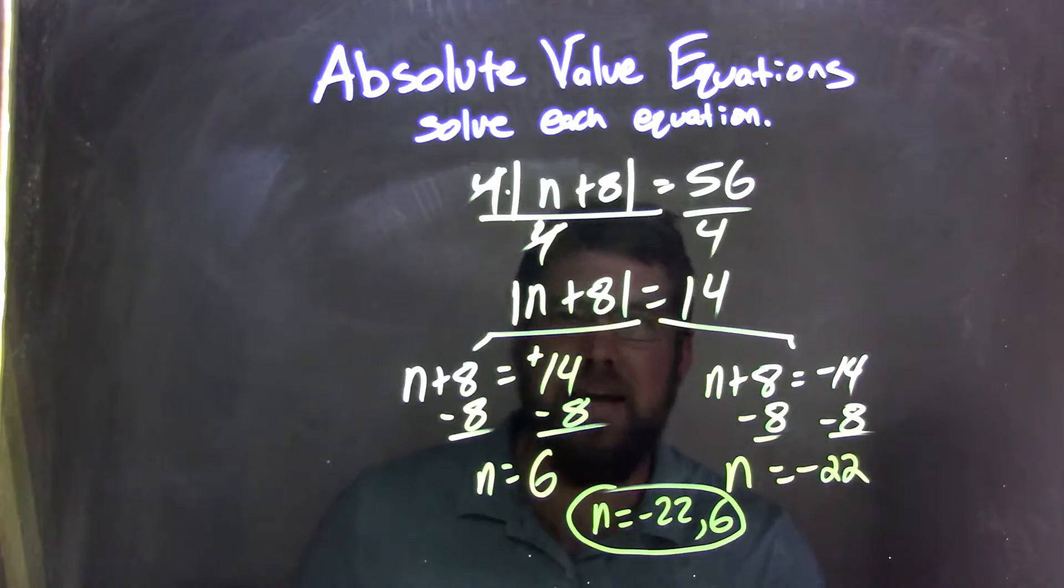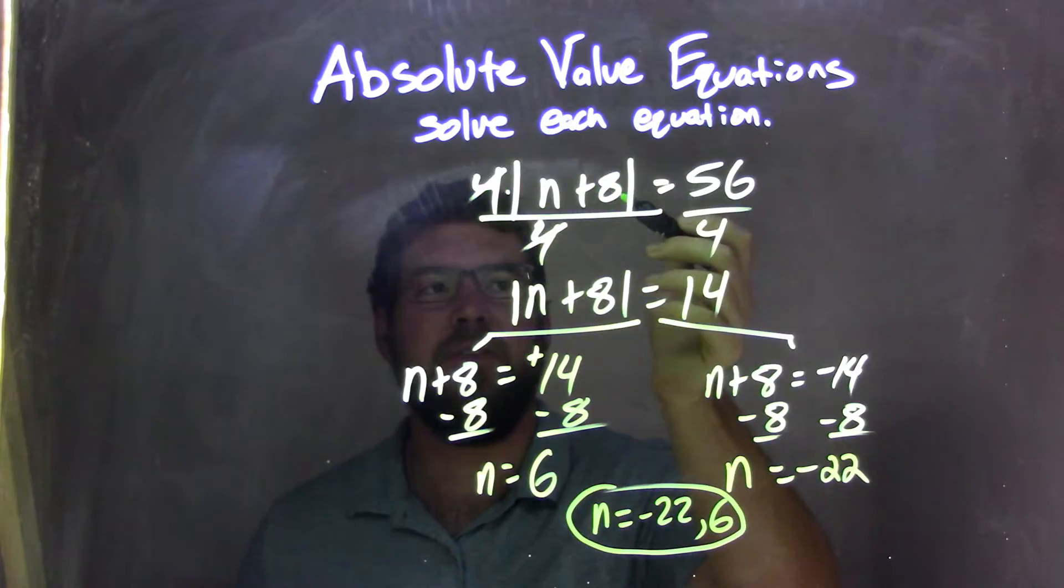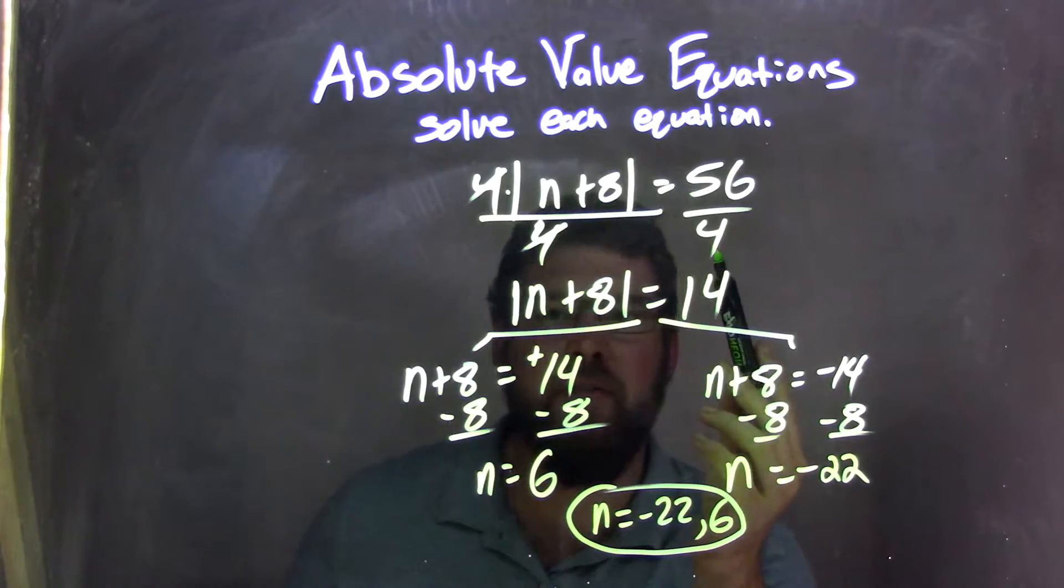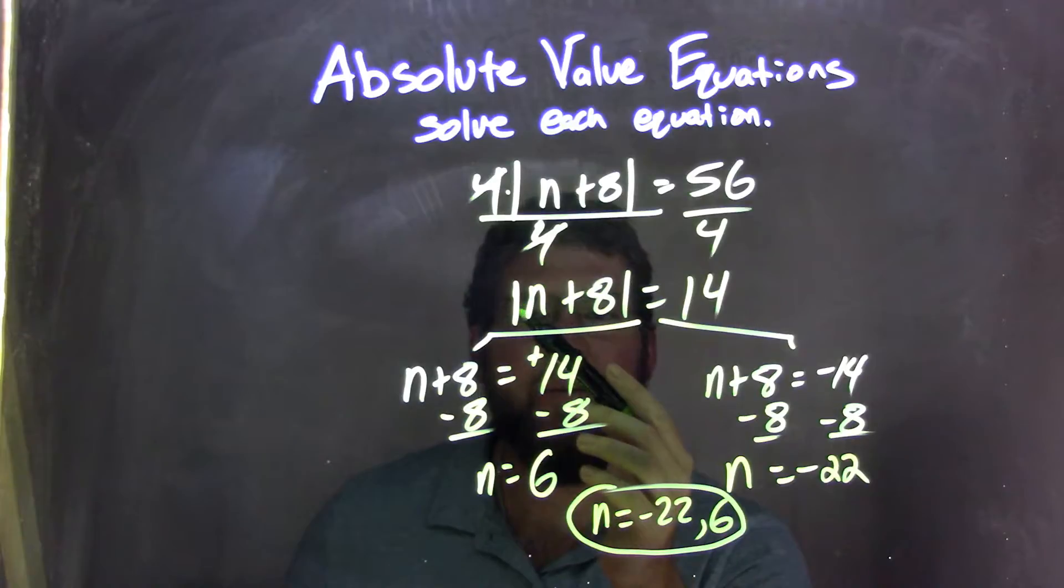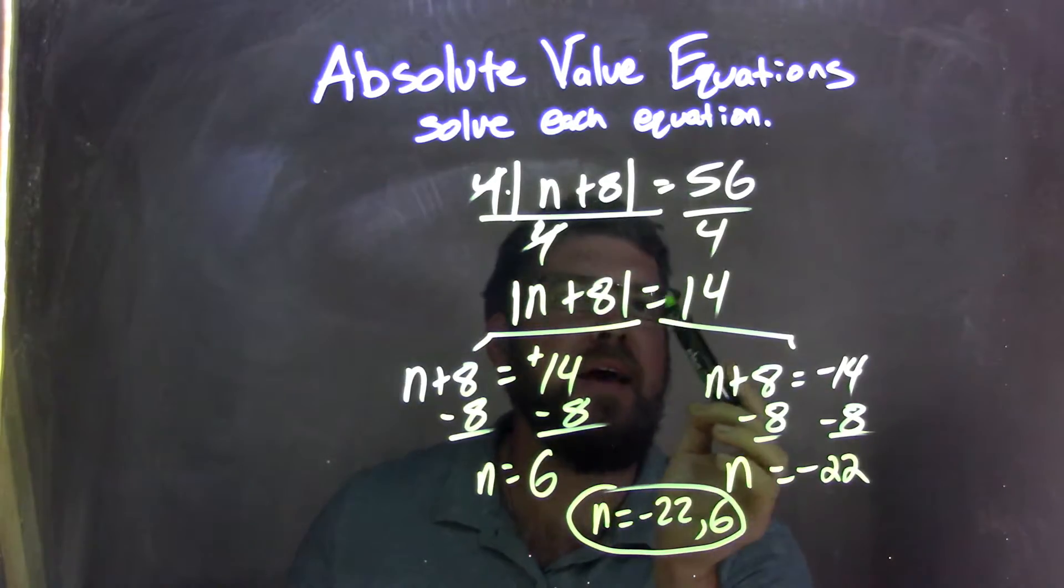Let's recap. We started with 4 times the absolute value of n+8 equals 56. To isolate the absolute value, I divided both sides by 4, which canceled on the left, leaving me with the absolute value of n+8 isolated—which is important—equals 56 divided by 4, which is 14.